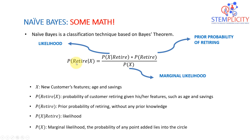What we want to do is calculate the probability of a customer retiring given his or her features — the vertical bar means 'given.' So X is simply the new customer's features, which are their age and savings. Imagine I'm sitting at a bank as a data scientist with a financial advisor next to me. A customer comes in and says their age is 20 and their savings are $200,000 — should they retire or not? That's what we compute: probability of retiring given their features.